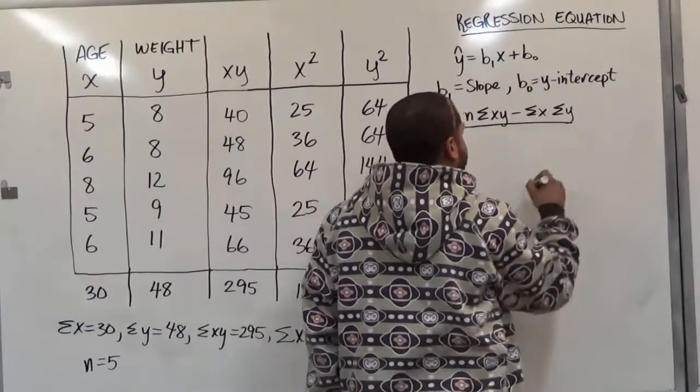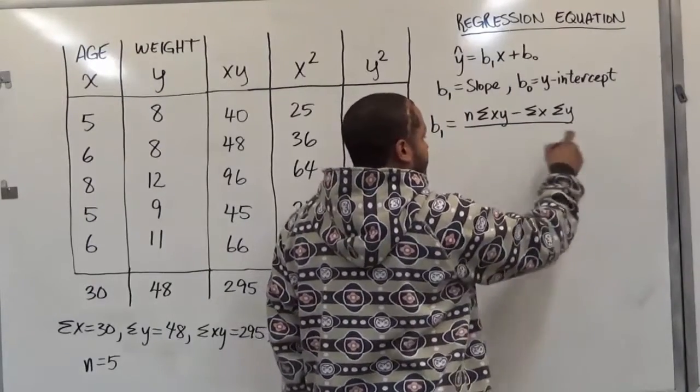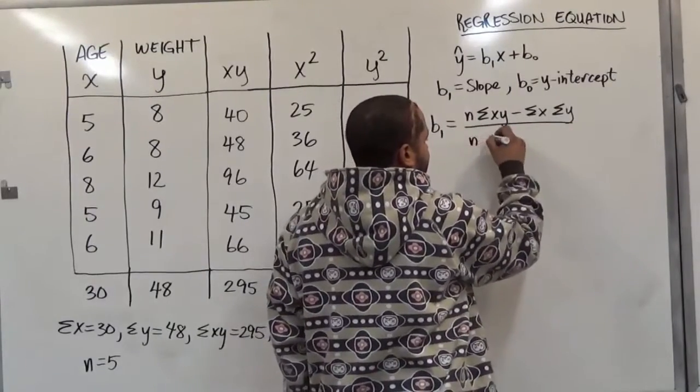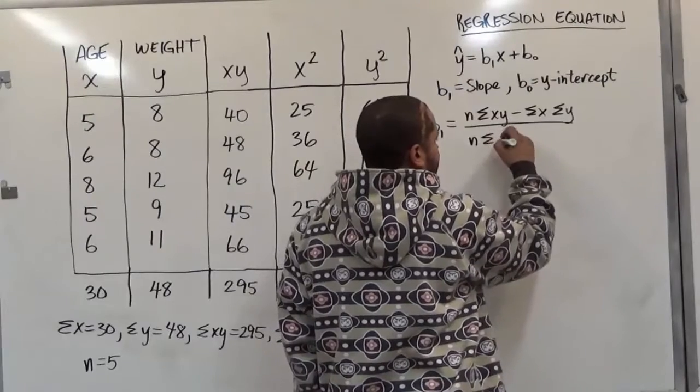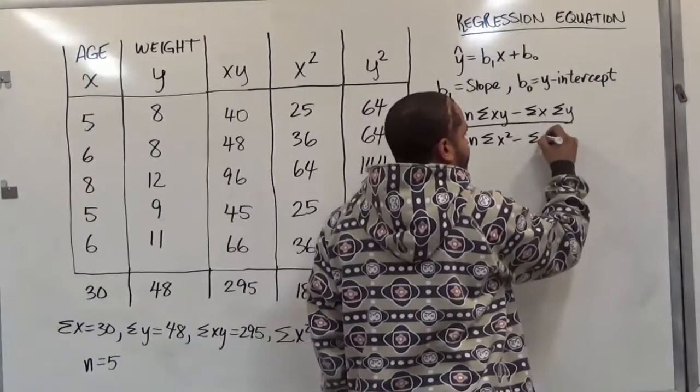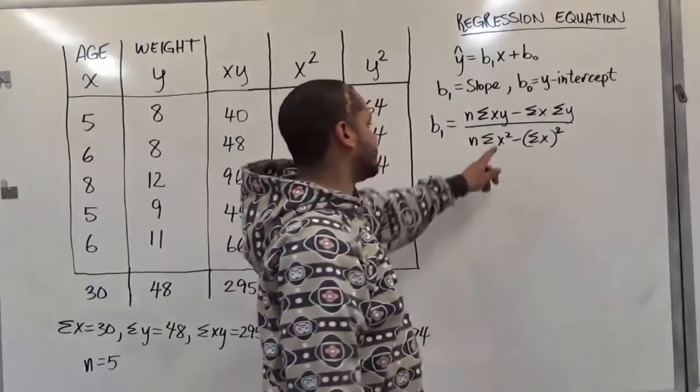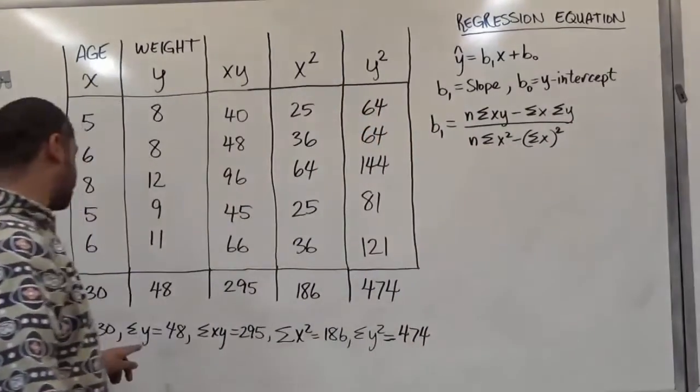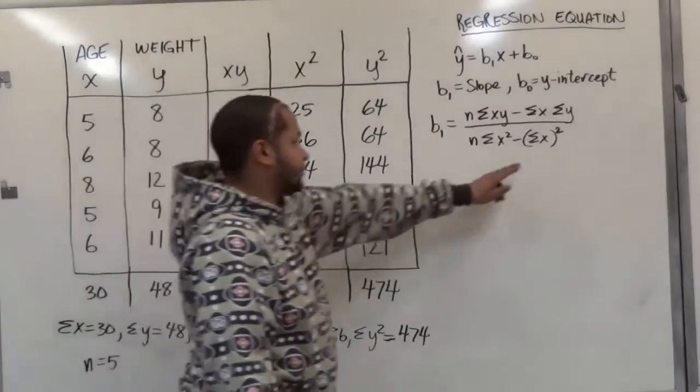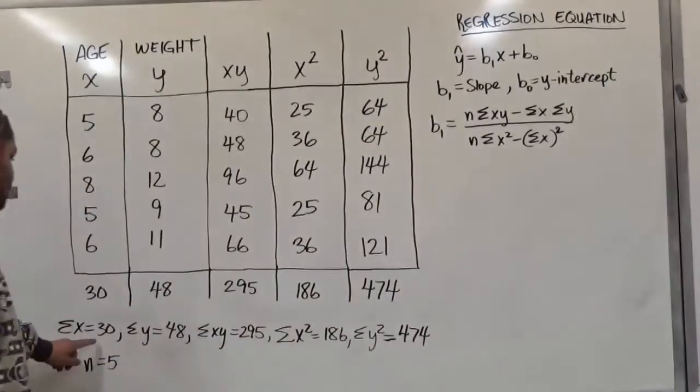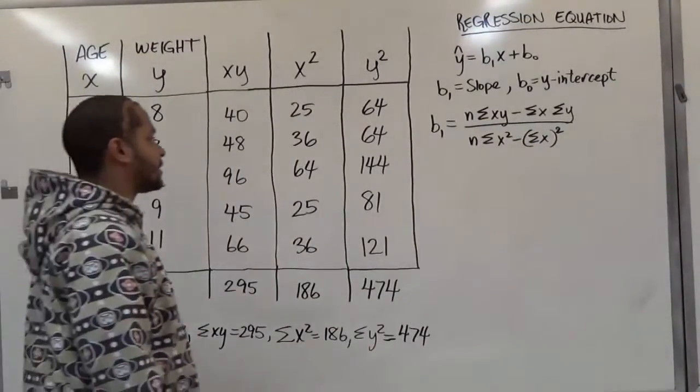Divided by just part of the correlation coefficient, which is going to be just n times the sum of x squared minus the sum of x, then squared. Be careful when you're answering this, as this is the sum of the value x squared, while the second term here is just the sum of x, then squared. Let's calculate this.